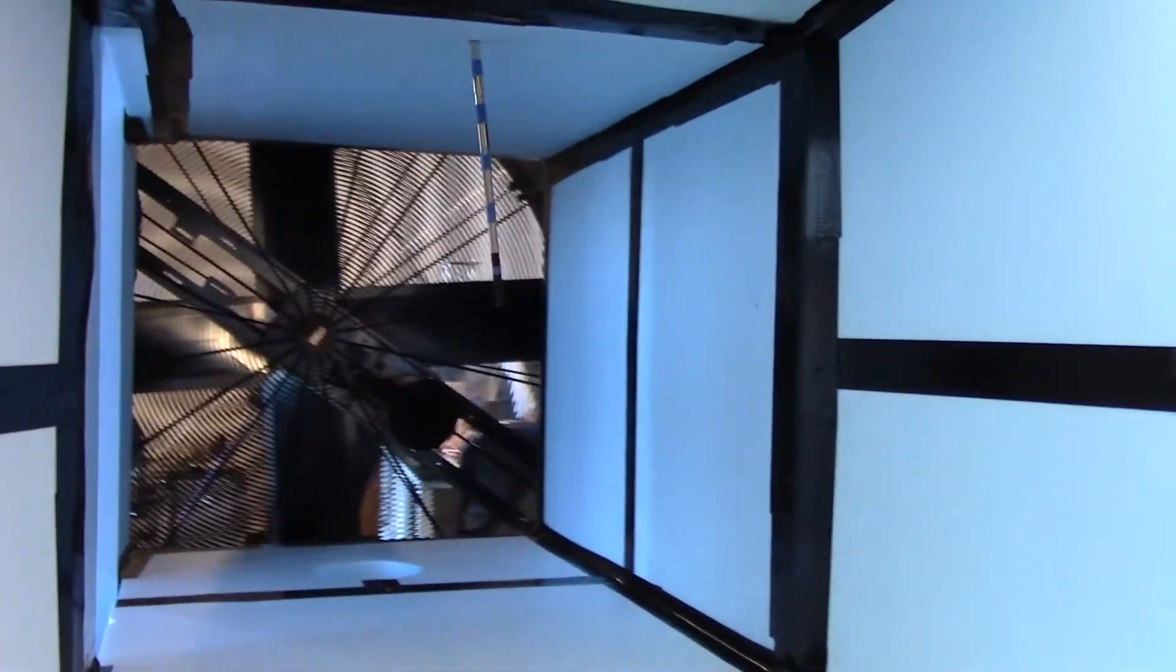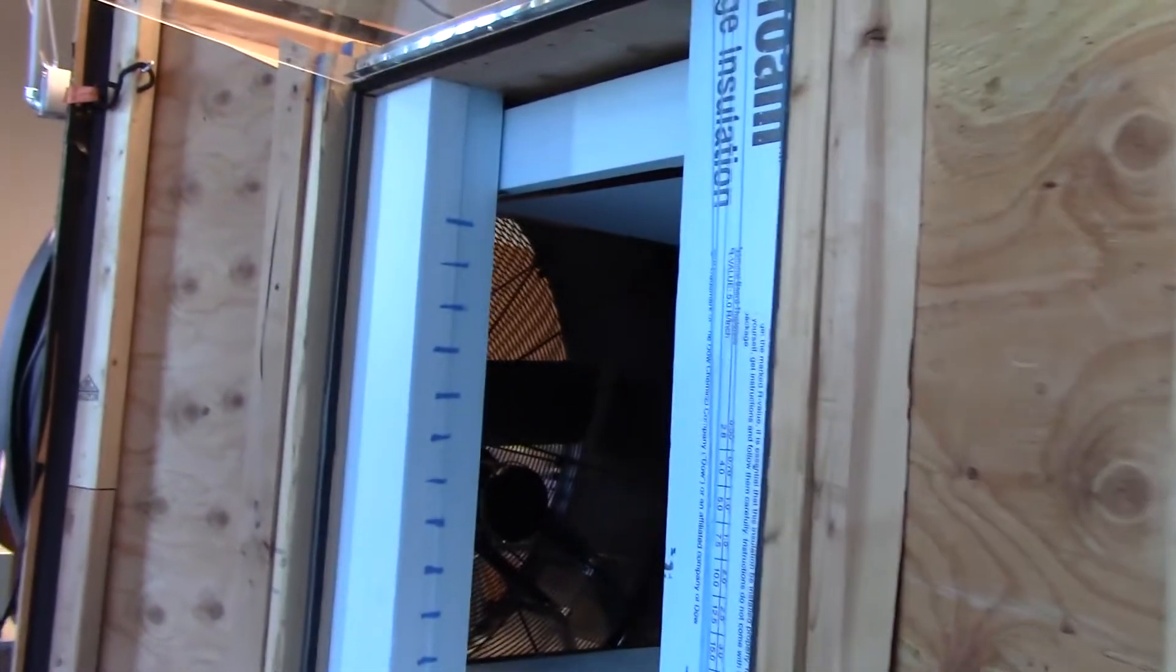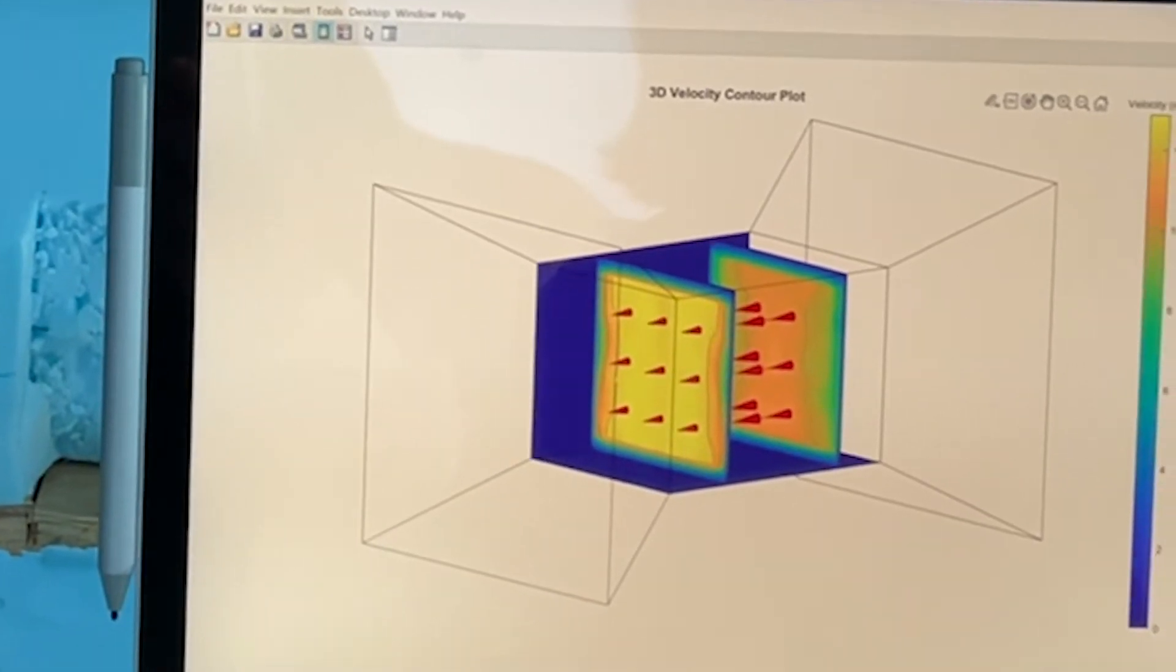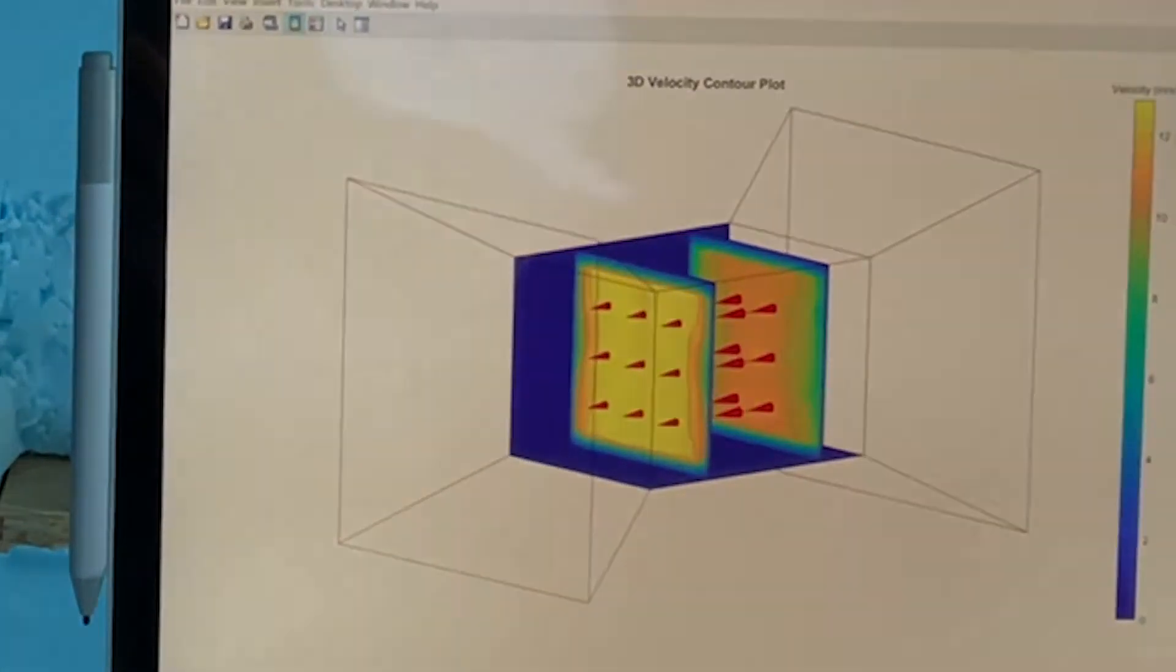The wind tunnel that we put together can get up to about 11 meters per second. The equipment that we have, we don't think we should push it any higher than that, so it's hard for us to test the turbine durability beyond those wind speeds.